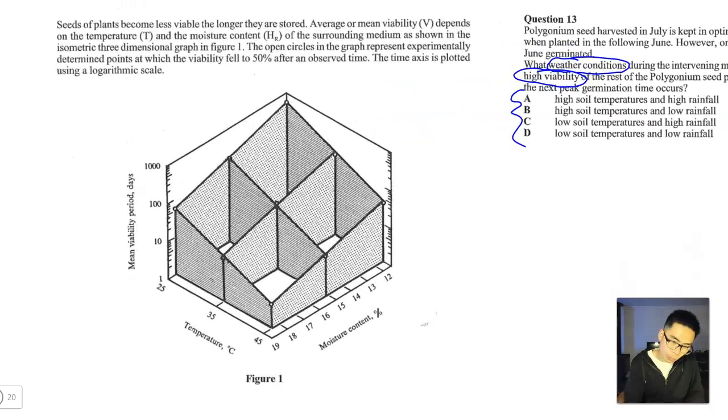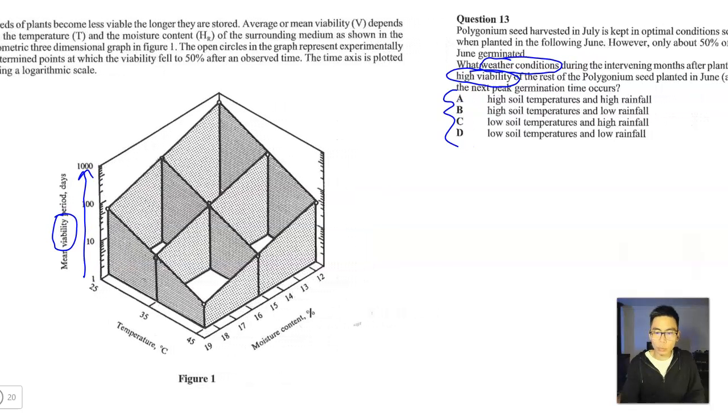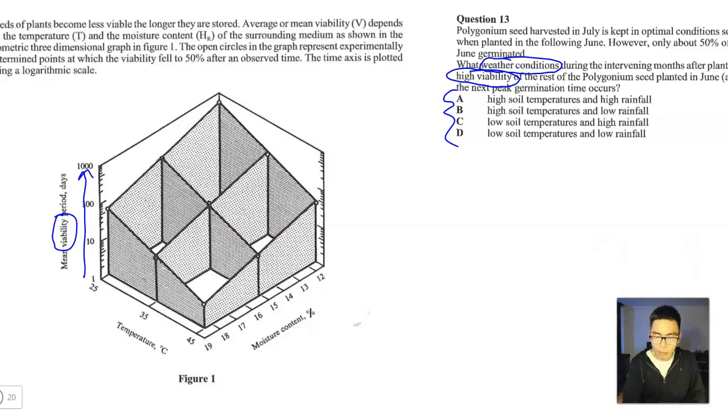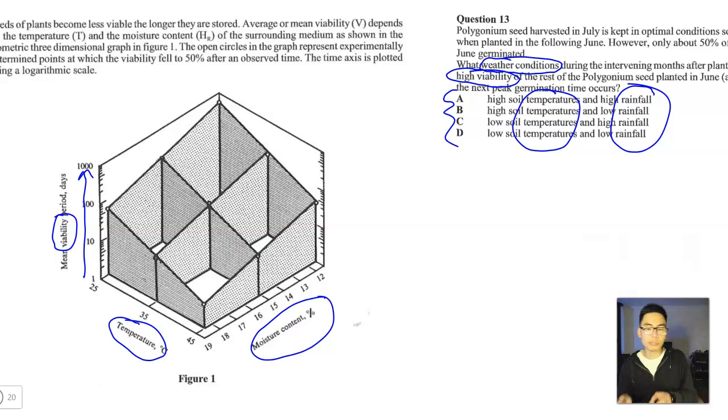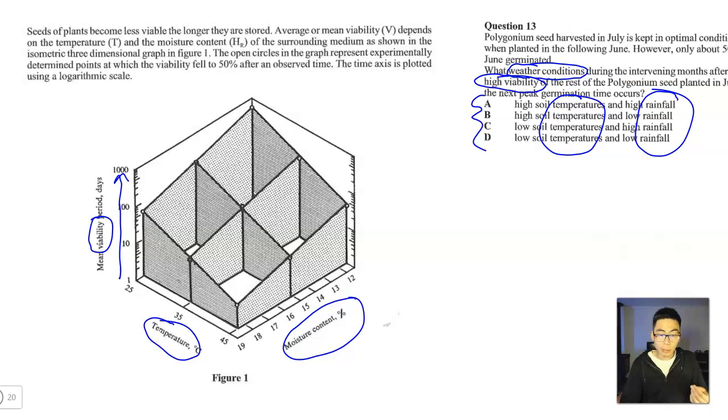If I zoom in a little bit more, here we go, we've got mean viability. So this scale is a measure of the viability of the seeds. And while it might not seem so obvious to begin with, the temperatures are also on this figure. So it doesn't say soil temperature. But it does talk about the temperature. And again, it doesn't talk about rainfall, but it talks about moisture content. So you need to be able to make a bit of a leap in judgment here and realize that yes, rainfall and moisture content are related. So those two factors of soil temperature and high rainfall can be related to the temperature and the moisture content in figure one.